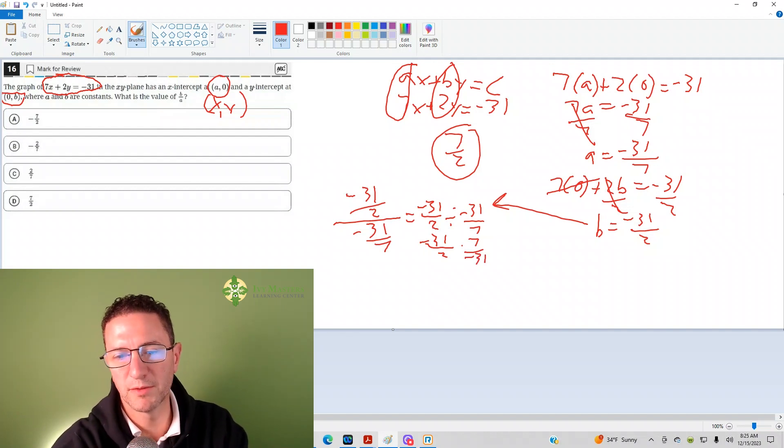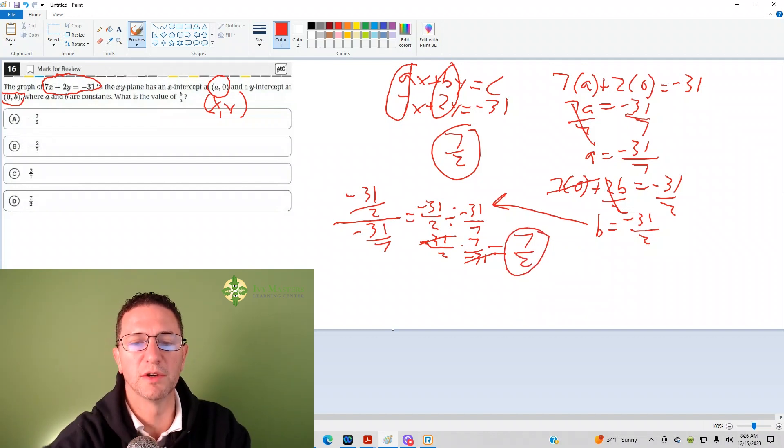Negative 31 over 2 times 7 over negative 31. Now, I could multiply the tops across. I could multiply the bottoms across. But when you're multiplying, negative 31 times 7 on the top is the same as 7 times negative 31 on the top. And if the 7 were over 2 and the negative 31 were over the negative 31, they'd just cancel. So, in other words, you could cancel across when you're multiplying. And voila, again, you get your 7 over 2.